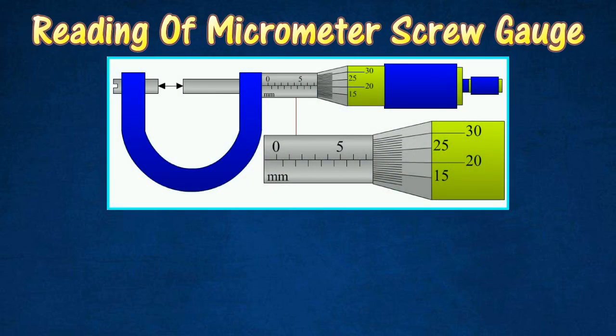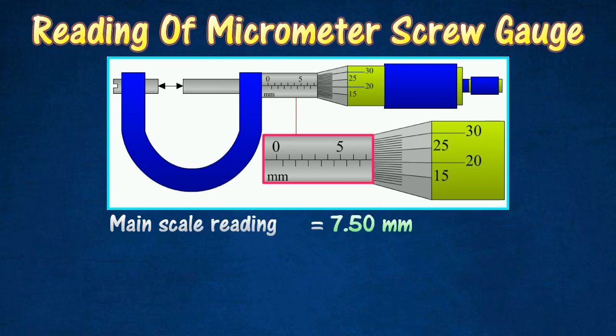The micrometer screw gauge in the diagram shows a reading of 7.71 mm. This reading can be determined according to the following steps. The first step is to determine the reading on the main scale. In this case, the reading on the main scale is 7.50 mm.